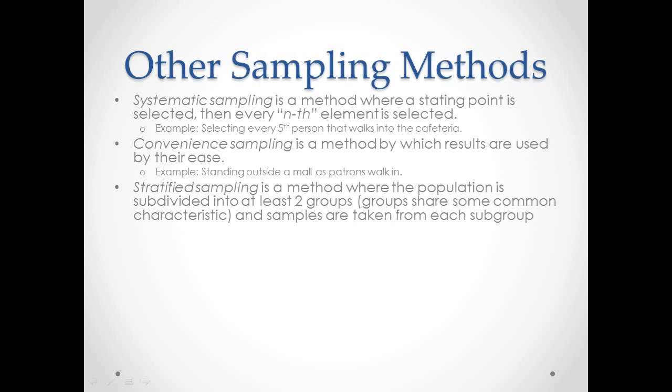Stratified sampling—the sampling method that I most agree with. You're splitting the population into at least two groups. Each person in the group shares a common characteristic, and your samples are taken from each of the subgroups. In my personal opinion, the stratified sample is the most accurate of sampling methods in terms of what you want to study.